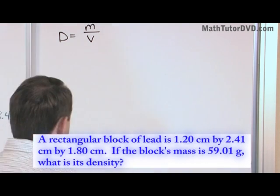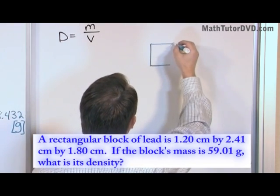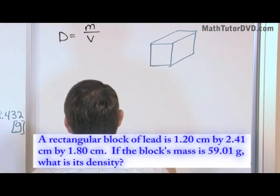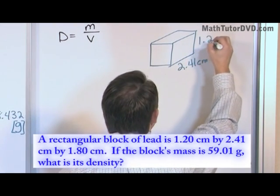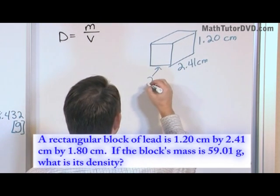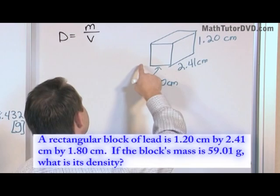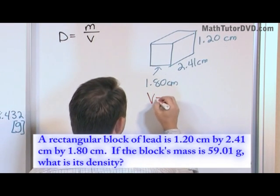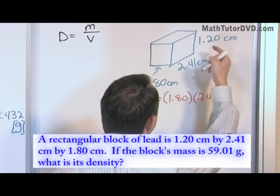We can calculate the volume because we know the dimensions of this block. It's a rectangular block — on one side it's 2.41 centimeters, on another side it's 1.20 centimeters, and the remaining side is 1.80 centimeters. We know the length, width, and height. To calculate the volume, we simply multiply them: volume equals 1.80 times 2.41 times 1.20.